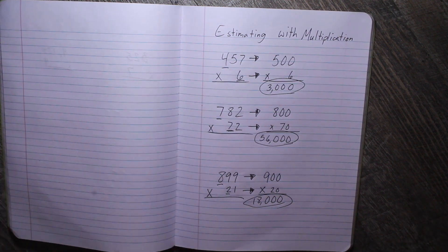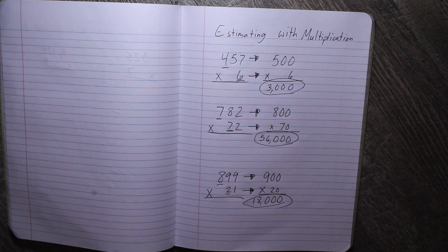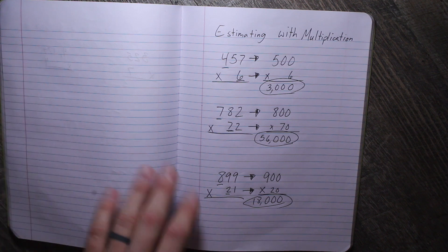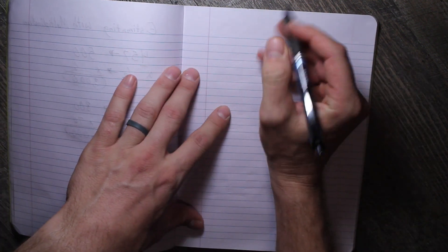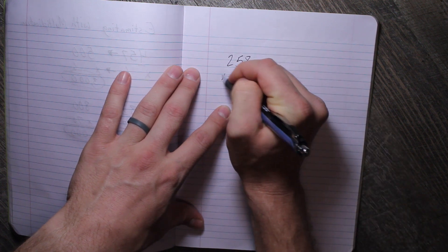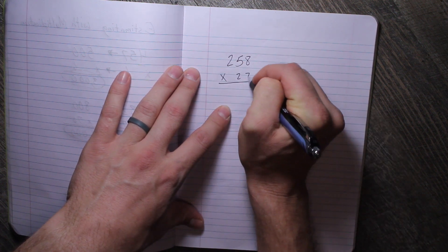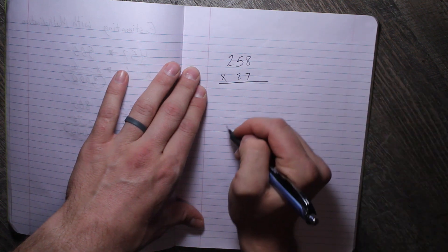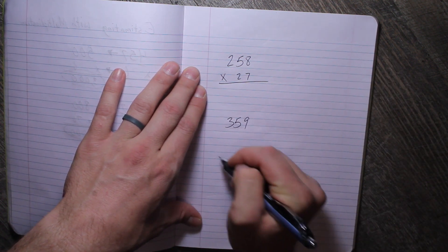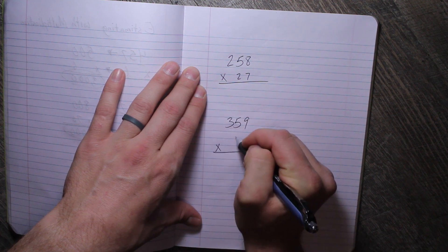So again, estimation is about getting a quick answer, not having to create an extra step. So we have a couple we want you to decide on your own. So let's try, on your own, let's try 258 times 27. And then also try 359 times 45.